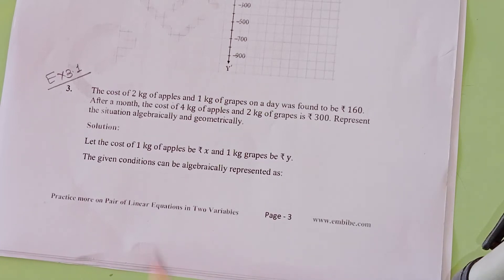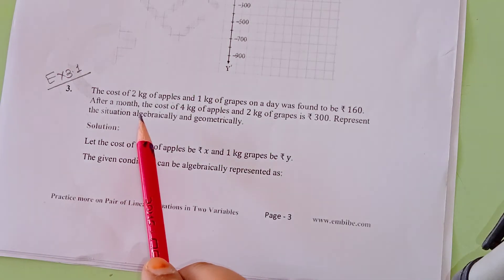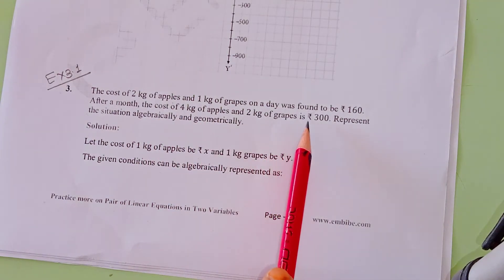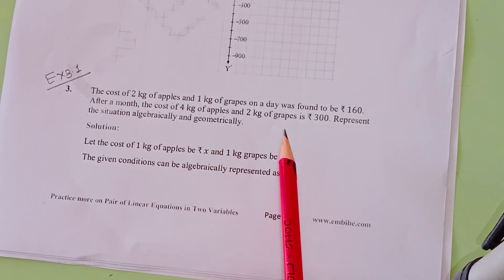The next line is after a month, if we go to this purchase, then the cost of 4 kg of apples and 2 kg of grapes is Rs. 300. So 4 kg of apples and 2 kg of grapes, if we buy, its total price is Rs. 300.